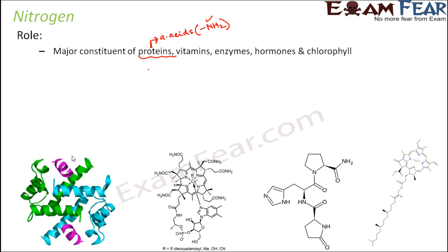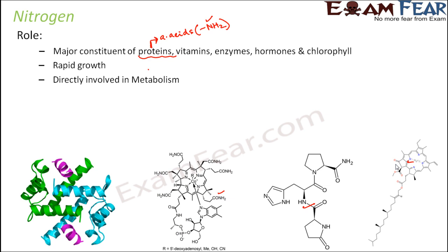Looking at some of the structures shown here, the first structure represents a protein — a quite complex structure which has amino acids and hence has nitrogen. Vitamins, enzymes, and chlorophyll all contain nitrogen. Nitrogen is an important constituent of so many important molecules inside a plant. It helps in rapid growth, which is why it is a macronutrient; without nitrogen, plants would not grow and the plant life cycle would not be completed. It is also directly involved in metabolism — the metabolic processes involved in the synthesis and transfer of energy.